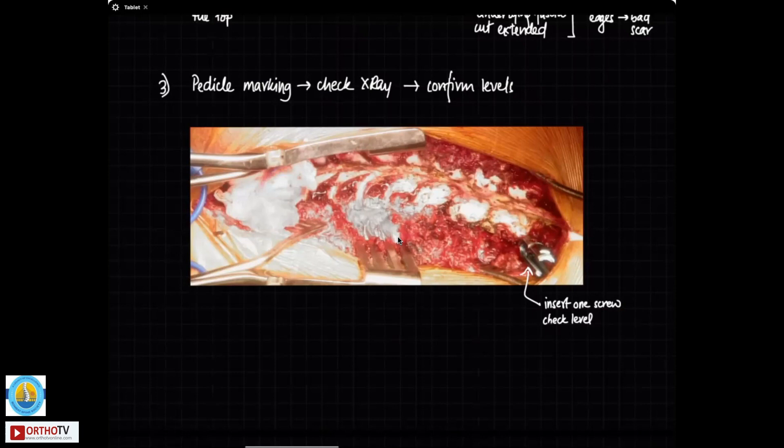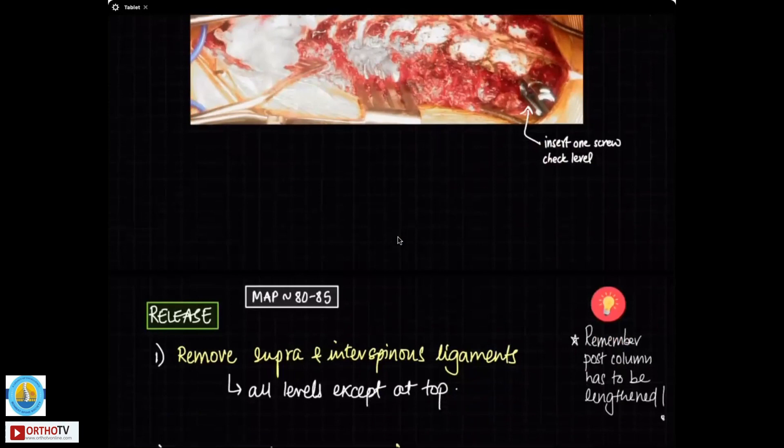Remember that the vertebral levels are checked or decided, your UIV and LIV are decided on the basis of x-ray and not on the basis of how the curvature is intraoperatively. If you find intraoperatively something is becoming neutral, that is not your lower end vertebra. The lower end vertebra is always radiographic and it is decided pre-op and it is not decided intraop. You have to get a check x-ray to determine your fusion levels.